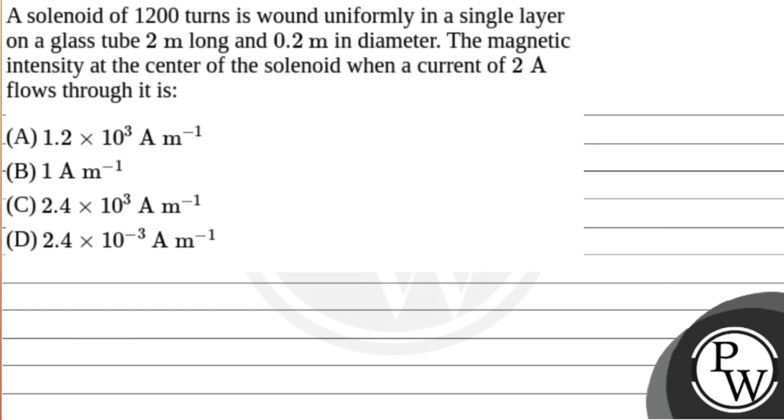Hello everyone. Let's read the question. A solenoid of 1200 turns is wound uniformly in a single layer on a glass tube 2 meters long and 0.2 meters in diameter. The magnetic field intensity at the center of the solenoid when a current of 2 amperes flows through it is. Four options are given. Let's find out the solution.